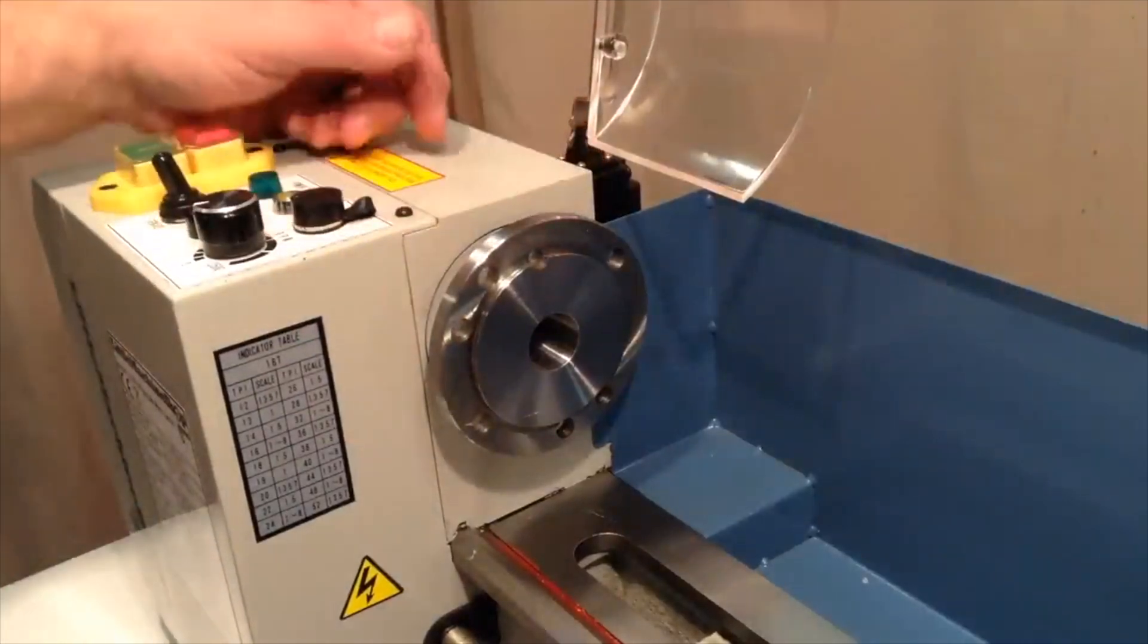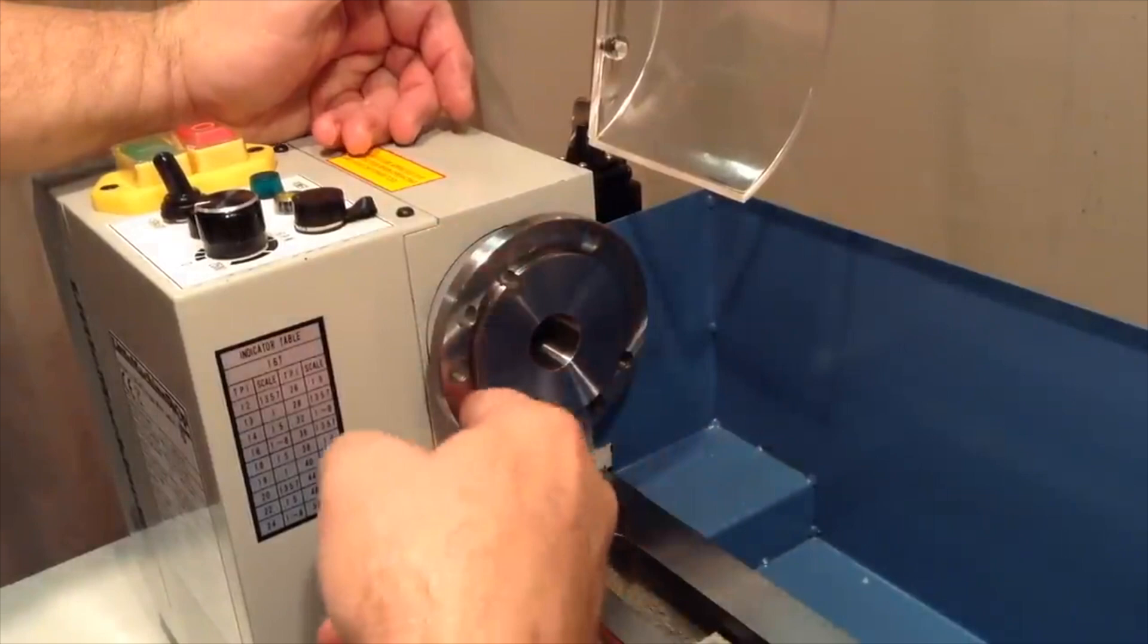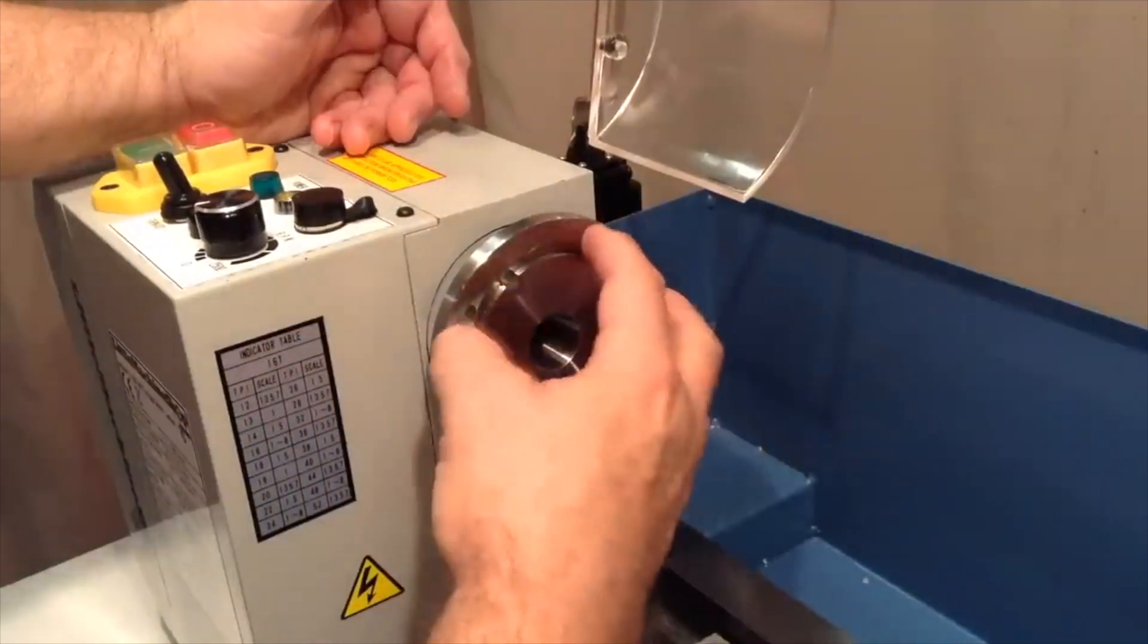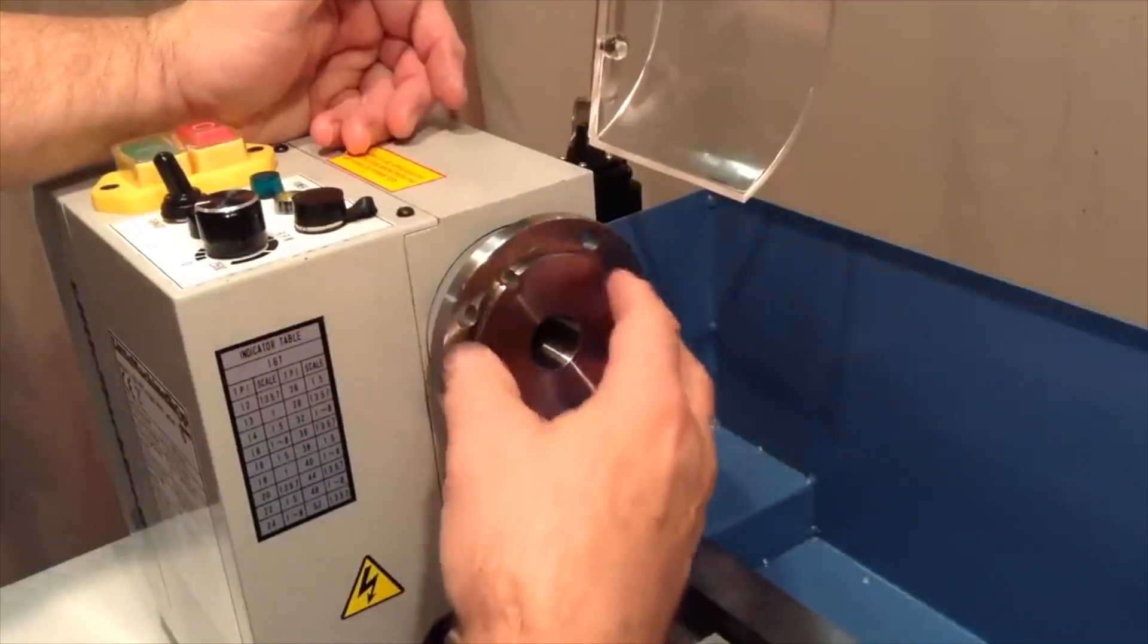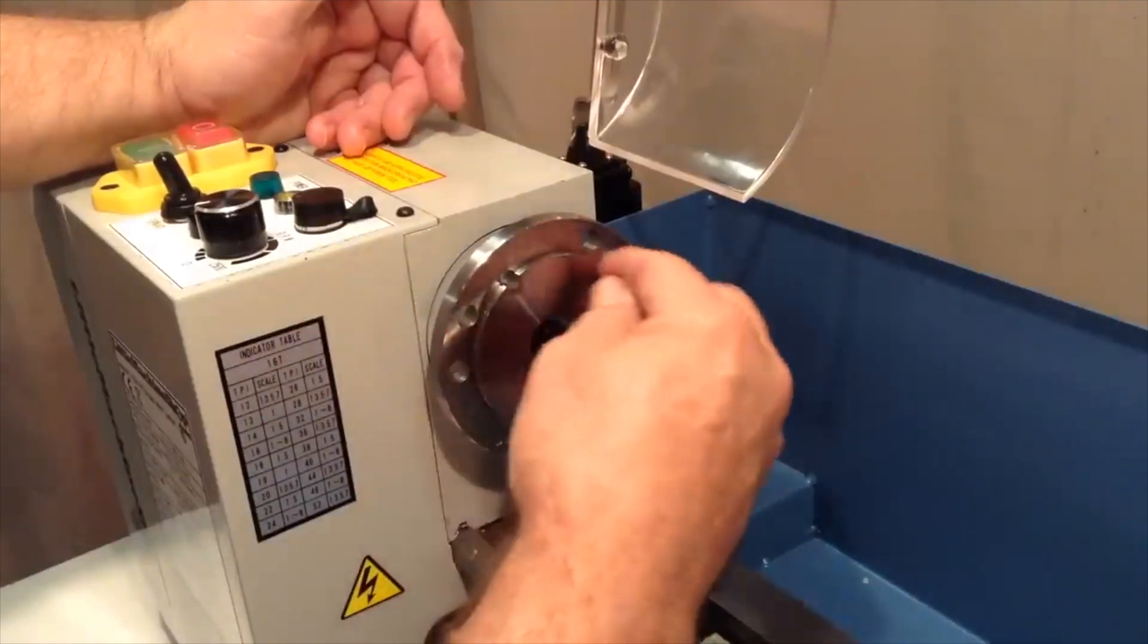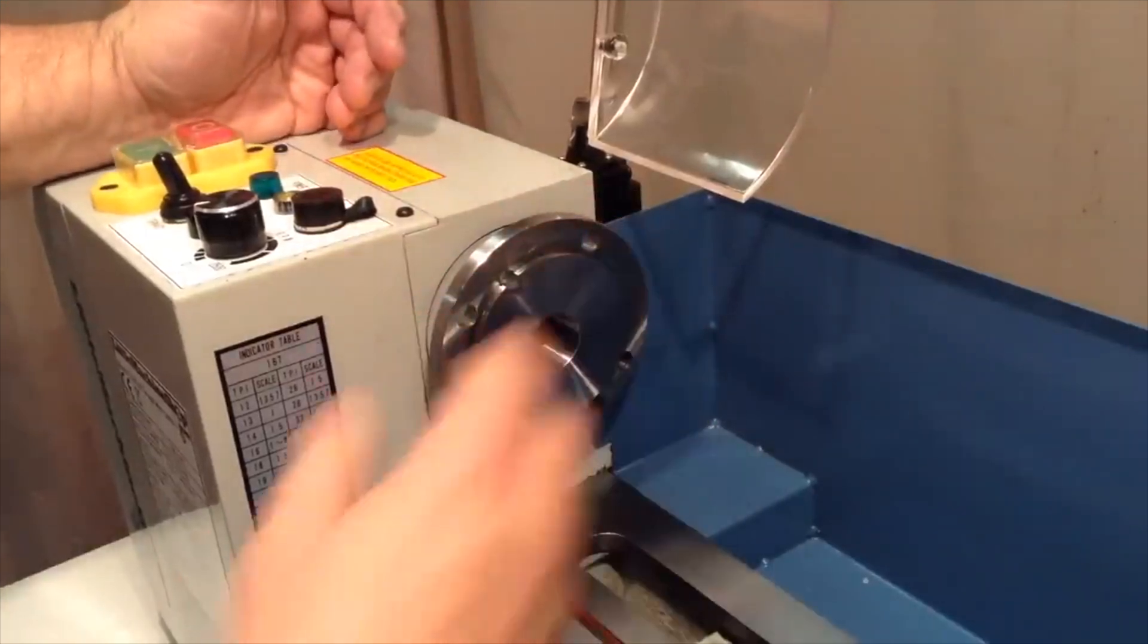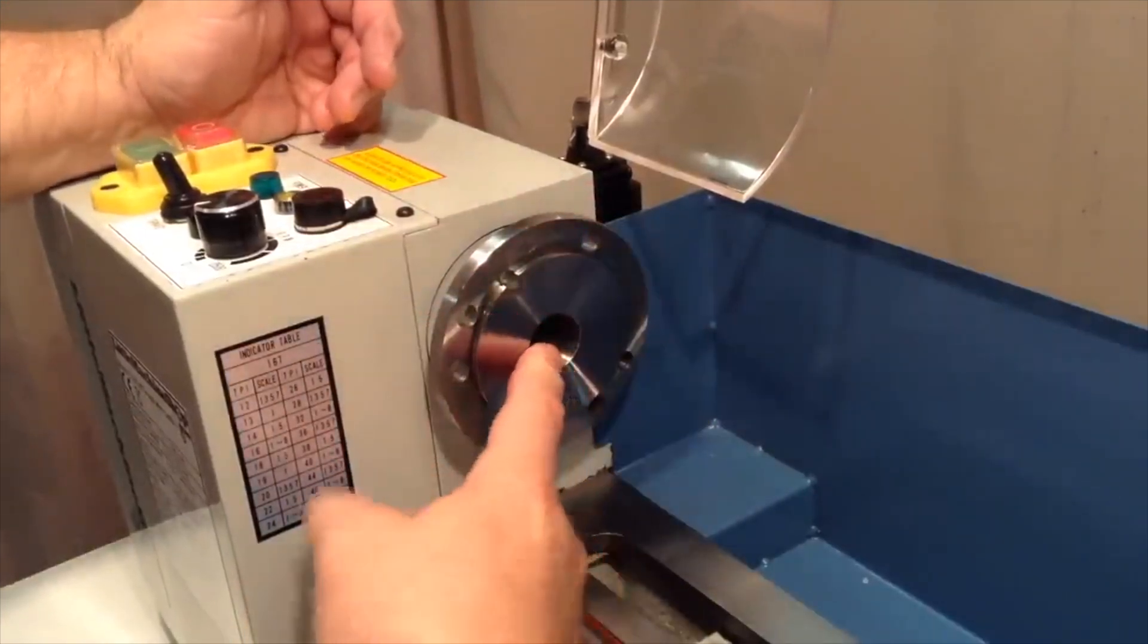The spindle of course is the main driven element of the lathe and it's also the registration of the chuck. So the accuracy of the lathe depends a great deal on how precisely this surface here is finished and of course the quality of the bearings and the quality of the machining on the spindle itself.